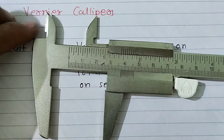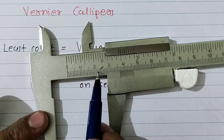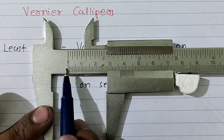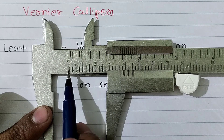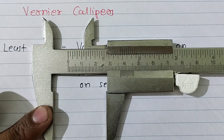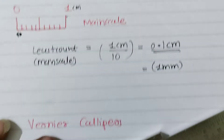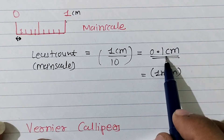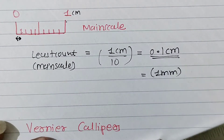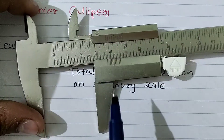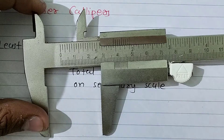This is my main scale. As we discussed, the value of 1 division on the main scale is 1 mm, or we can say 0.1 centimeter. Now, what is the total number of divisions on the secondary scale?